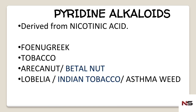Arachanate is also known as betel nut. Lobelia is also known as Indian tobacco or asthma weed. These synonyms are important — in exams they ask which of the following is known as betel nut, or which is known as Indian tobacco.